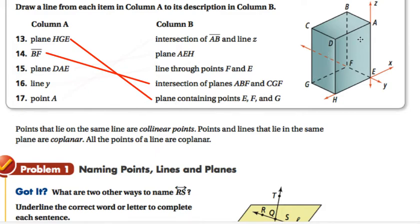Plane DAE. DAE is on this right side here, and plane DAE is the same as plane AEH. It's another way of labeling it. A, E, and H are all in the same plane as DAE.